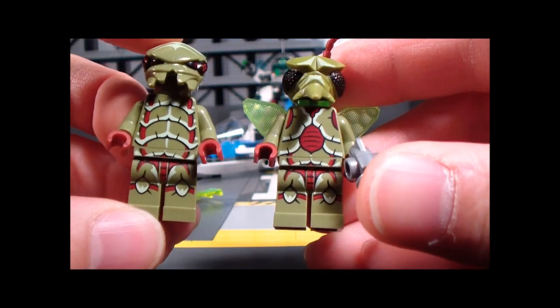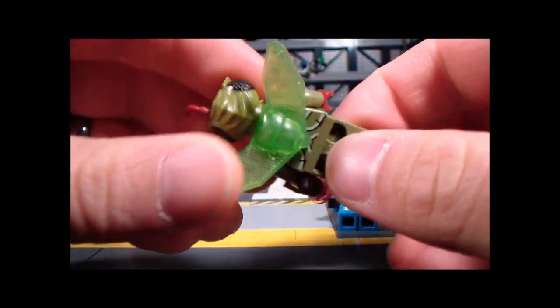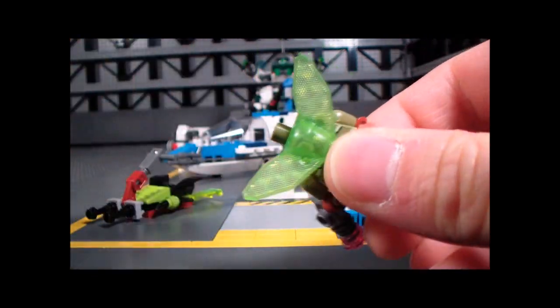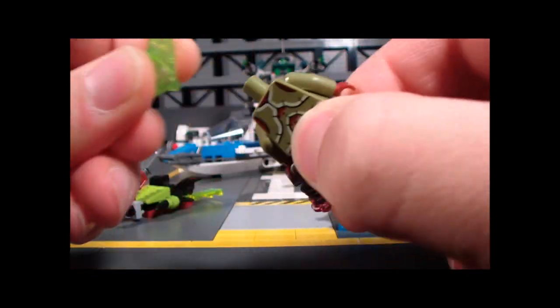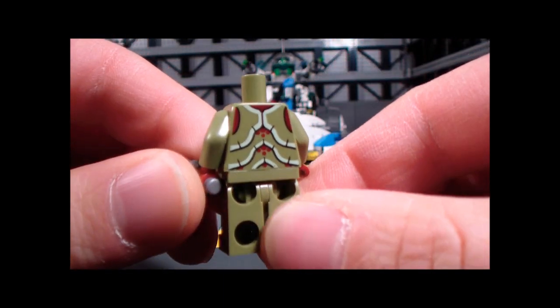Here's the view of the back. Let's take this head off. Here's the wing piece and here's the printing on the back of the torso there.